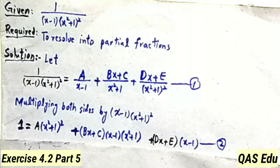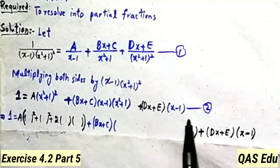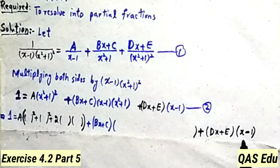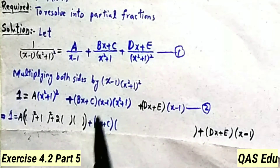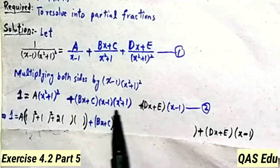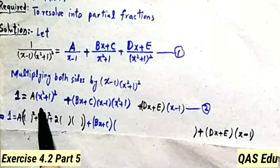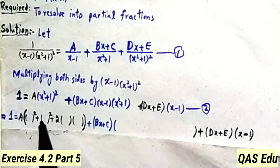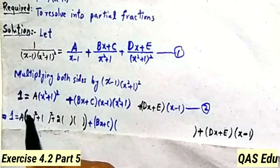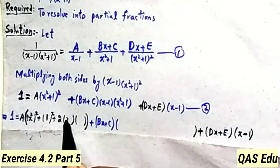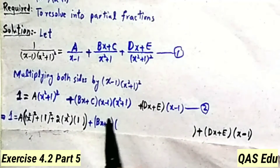Simplification of equation number 2: left-hand side keeps 1, right-hand side has Dx plus E into x minus 1. Expanding the product Bx plus C squared using the formula a plus b whole square equals a square plus b square plus 2ab, where a equals x square and b equals 1.